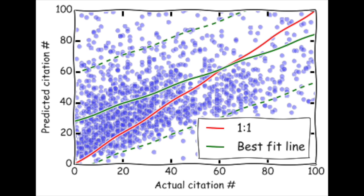Putting these features into regression algorithms, our predictions roughly track the actual citation numbers, but we still have a large spread.